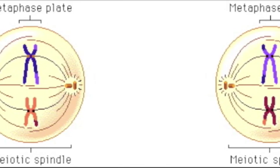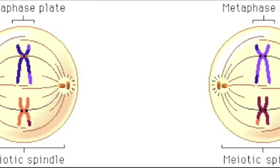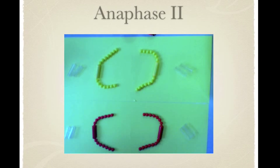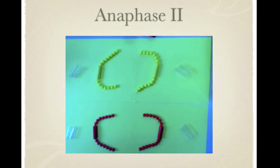During anaphase 2, breakdown of proteins holding sister chromatids together at the centromere allows the chromatids to separate, going in opposite directions.